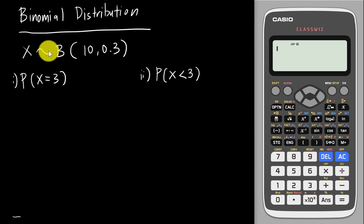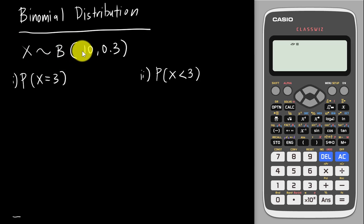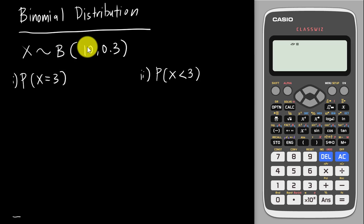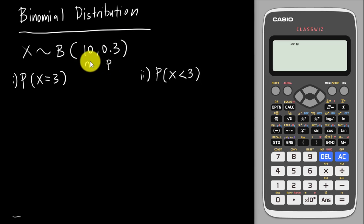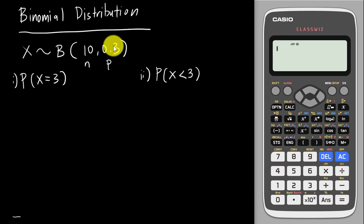In the exam, when you see X ~ B, the B here stands for binomial. If it were normal distribution, the B would change to N. The first parameter is n (total number of trials) and the second number is p (probability of success). So the first one is n and the second one is p.